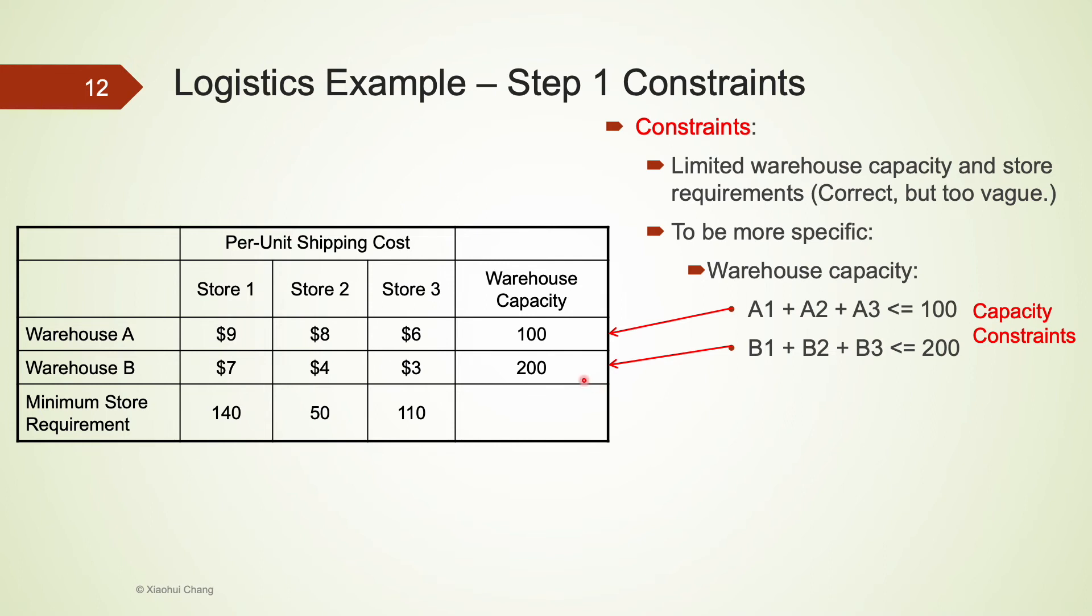Similarly for warehouse B, we can also write B1 plus B2 plus B3 is less than or equal to 200. I have inputted these lines into Lingo as well. Again, I have included a comment line to indicate the following two lines are for the capacity constraints, and I also end each line with a semicolon.